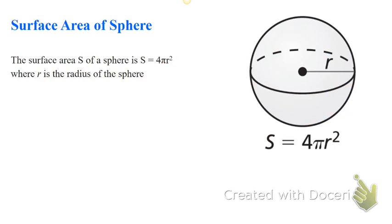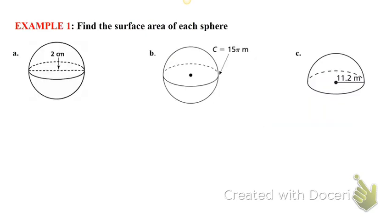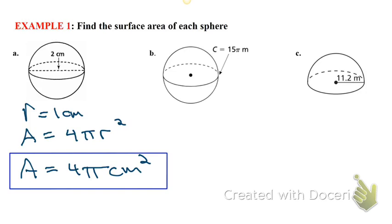The surface area around the sphere is four times pi times the radius squared. So if the diameter is two centimeters, then the radius is one centimeter. You can square one centimeter and get one. So it's just four pi centimeters squared for the exact value. And if they ask you for a decimal value to a certain decimal place, you can plug that into your calculator.